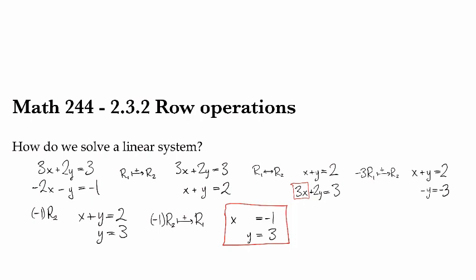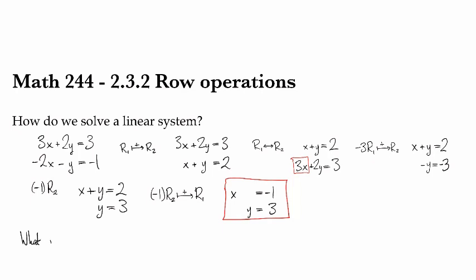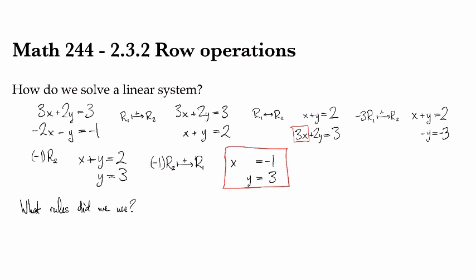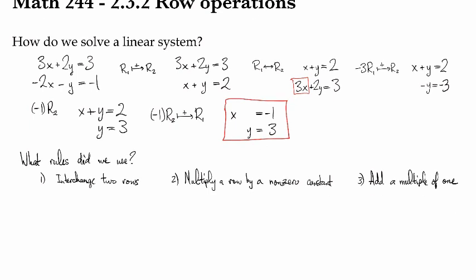So what rules did we use? We could interchange two rows. We could multiply by a non-zero constant. And we could add a multiple of one row to another row.